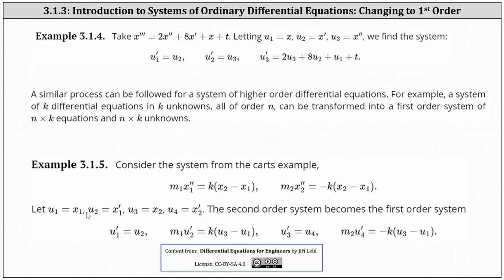To begin, if u1 equals x1 and u2 equals x1 prime, we have u1 prime equals u2. Then moving to the differential equation, m1 times x1 double prime is equal to m1 times u2 prime, which equals k times the difference of x2 and x1, which is the difference of u3 and u1. Moving to the second equation, if u3 equals x2 and u4 equals x2 prime, we have u3 prime equals u4. Then m2 times x2 double prime equals m2 times u4 prime, which equals negative k times the difference of u3 and u1. Notice now we do have a first-order system.